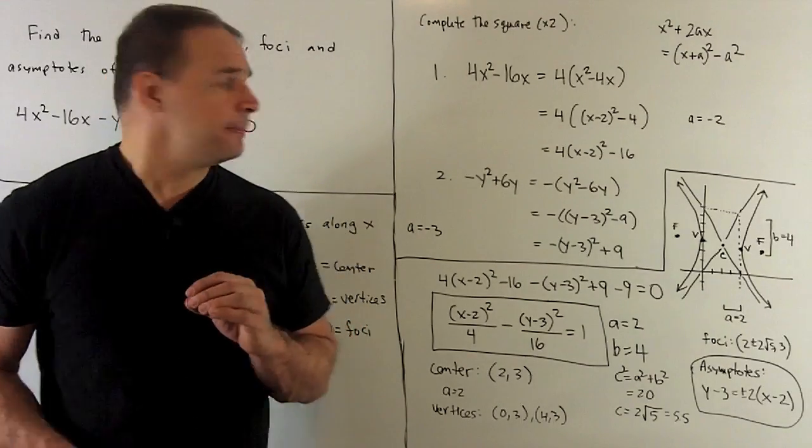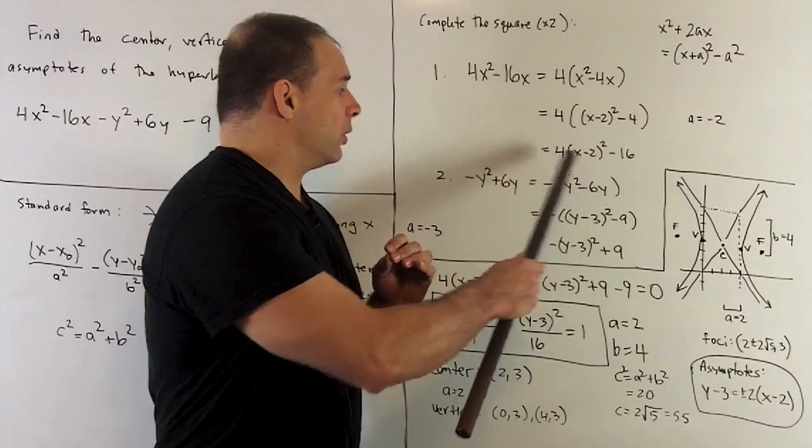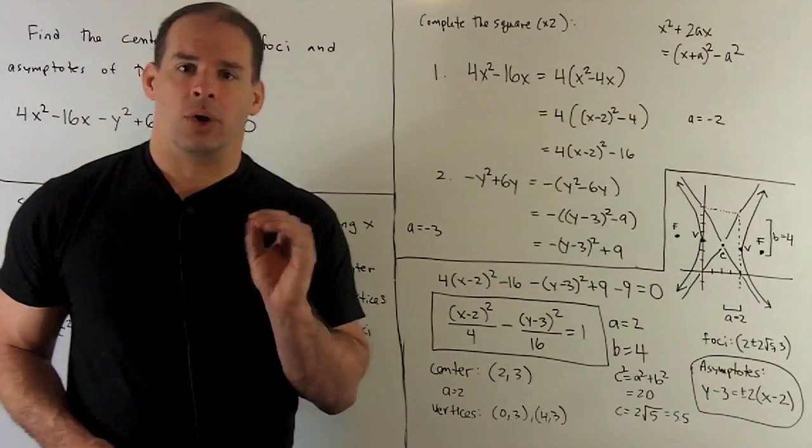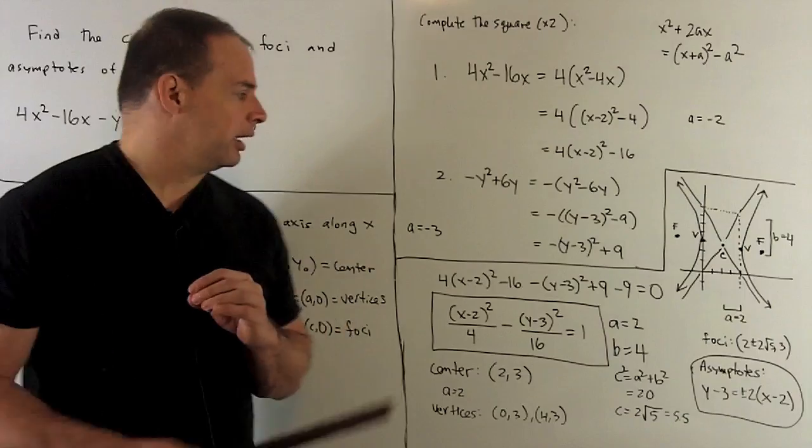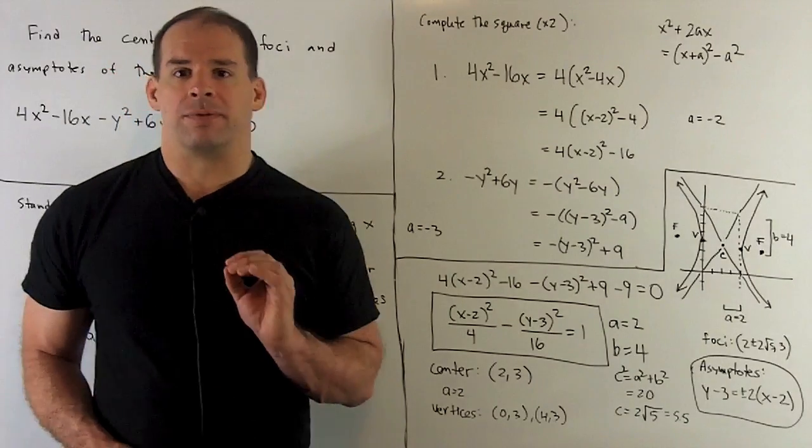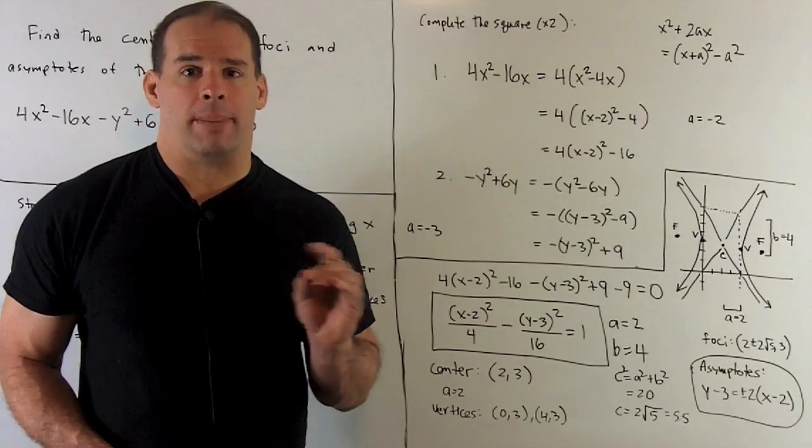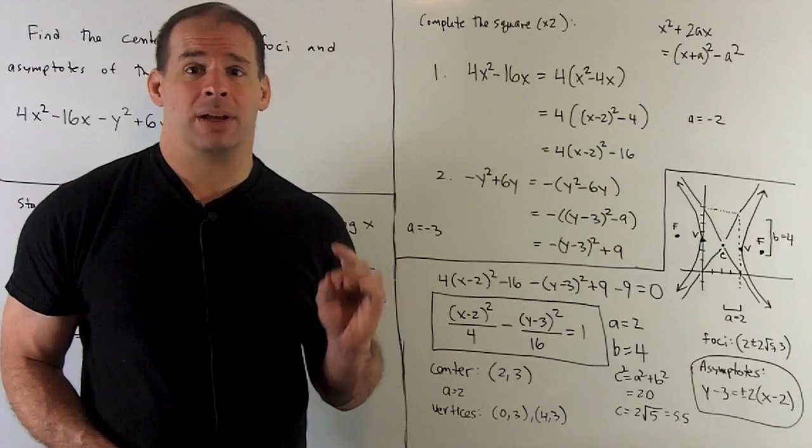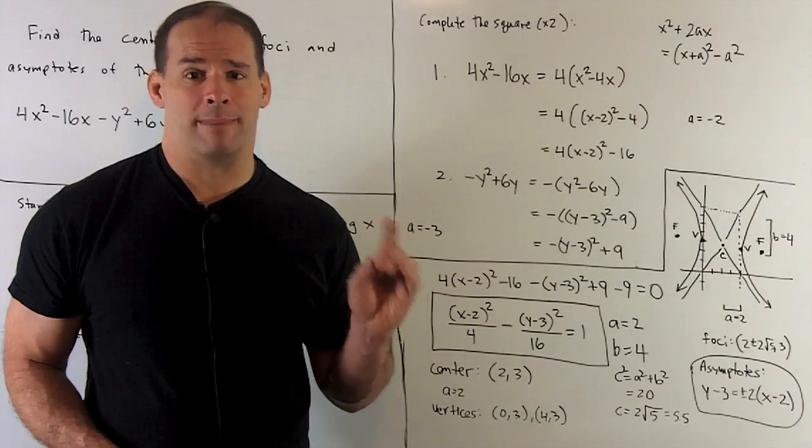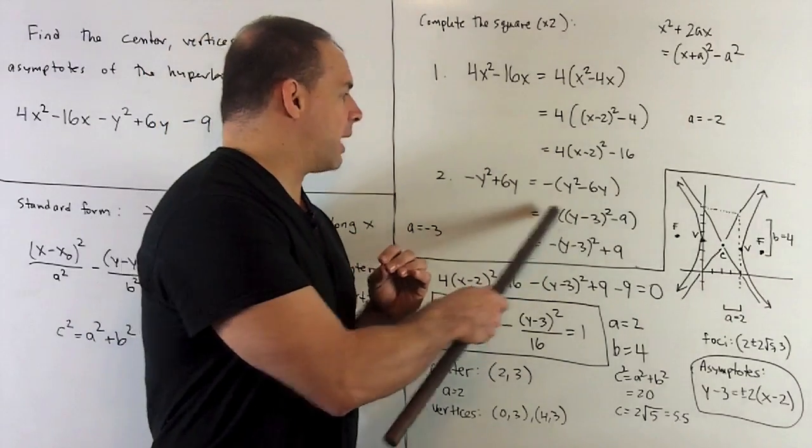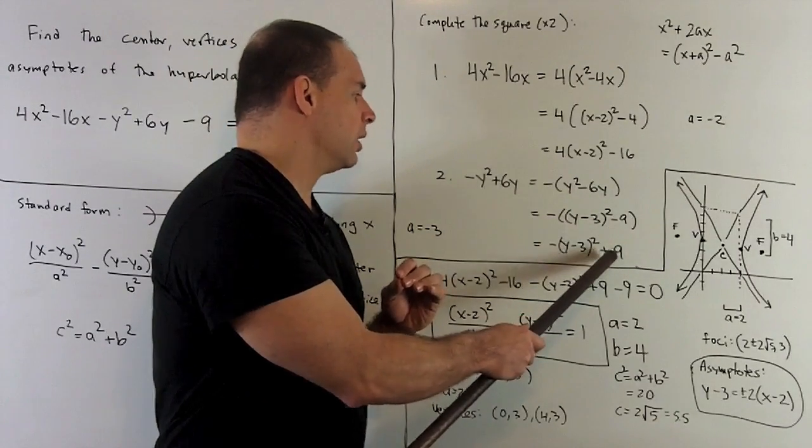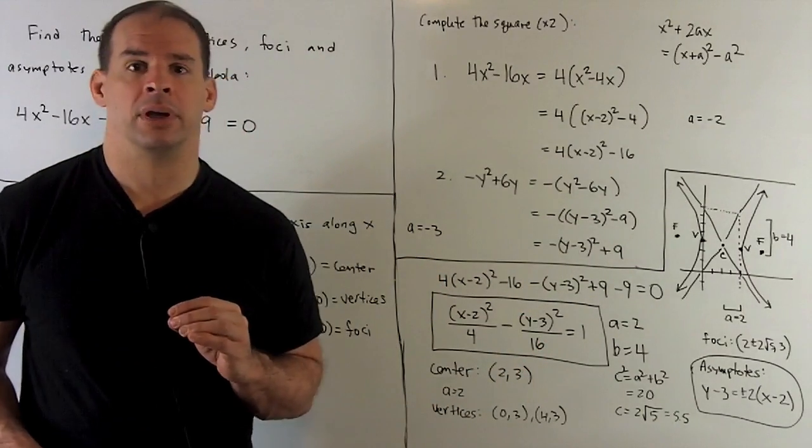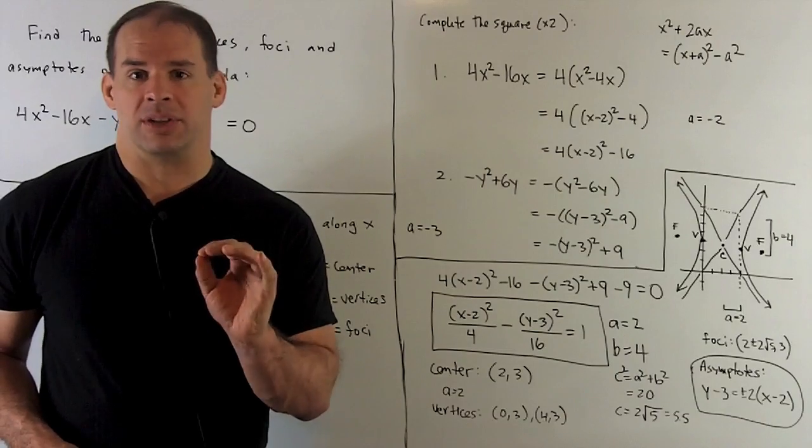Here, we'll start by factoring out a minus sign. Then we note here, the 2a that goes with the y is -6. So a = -3. Put it into the formula. That gives me (y - 3)² - (-3)², which is -9. You push your minus sign through. Since I have parentheses here, make sure you get your plus on the second term. That's completing the square.